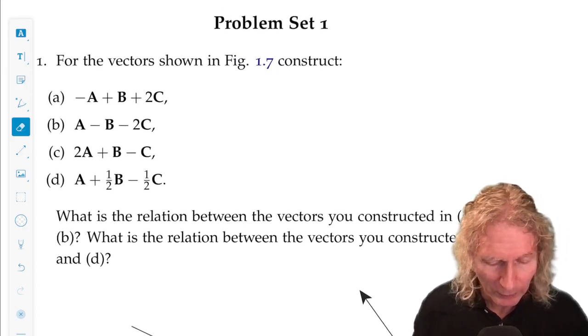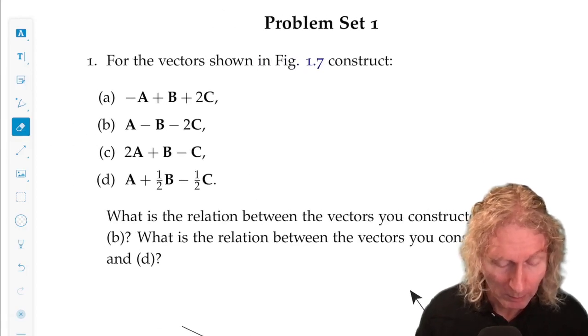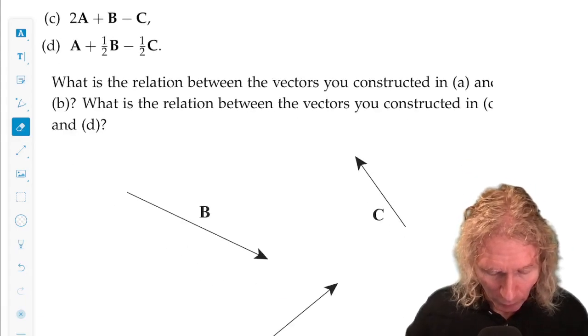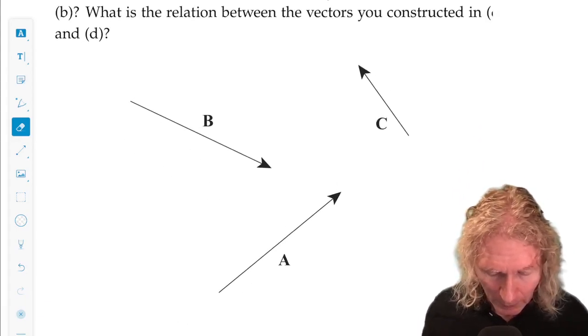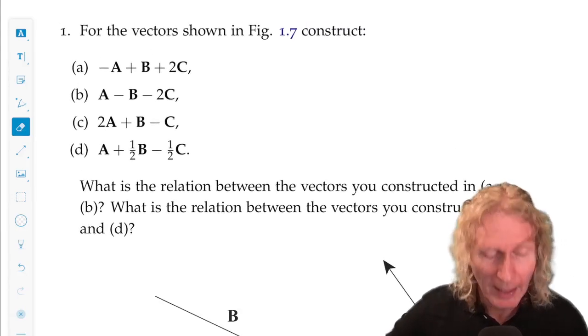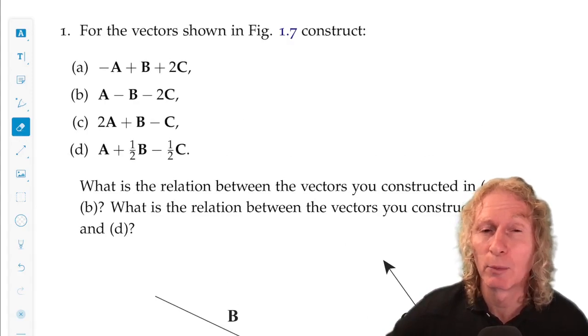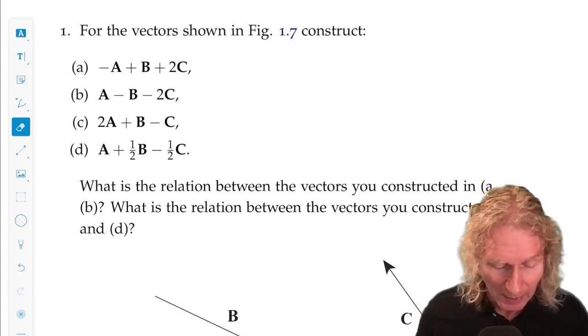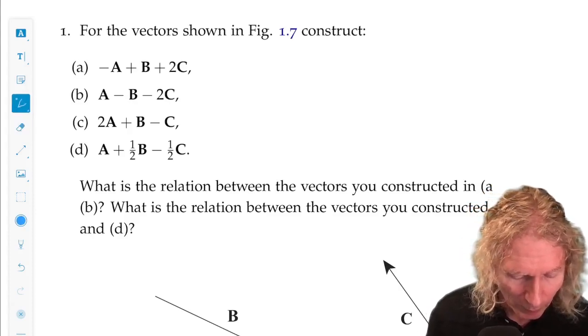So this exercise, problem set one, problem one, refers to three vectors that I've drawn in the figure below and I want you to add them up and multiply them by these particular scalars in this way. That is, find these particular expressions.